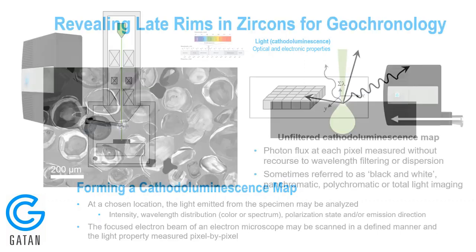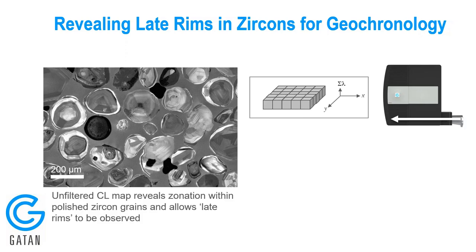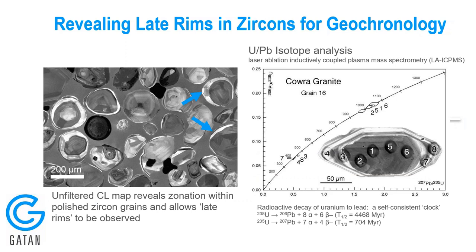So far we've talked about unfiltered CL, which is only showing the intensity as a function of position. One application is revealing late rims in zircons for geochronology. By acquiring all of the light emitted from the sample as we scan the beam across, we can see the difference in intensity as a function of position. We can couple this with a corollary technique such as mass spectrometry.